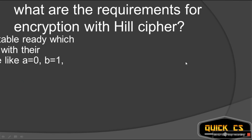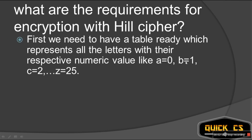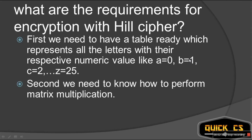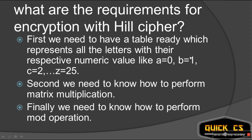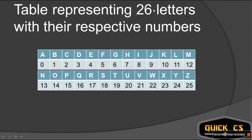What are the requirements for encryption with Hill Cipher? First, we require a table which represents all the letters with their respective numbers — A is represented by 0, B by 1, C by 2, D by 3, like that till Z equals 25. Second, we need to know how to perform matrix multiplication. Third, we need to know how to perform the mod operation, that is modular operation. We'll learn all three things in this one example. The table represents 26 letters: A=0, B=1, C=2, D=3, E=4, like that till Z=25, because there are 26 letters starting from 0.